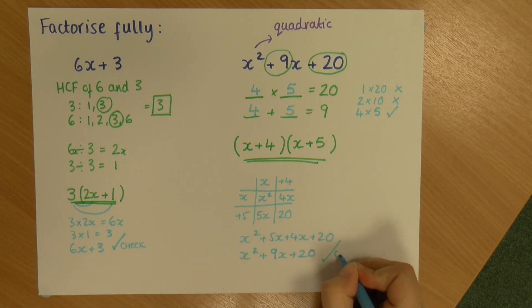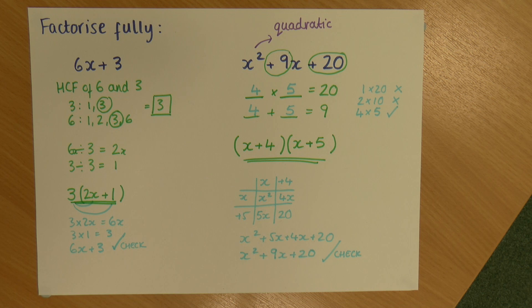So tick, check is correct. And it's always worth checking these because you can make silly mistakes extremely easily. And so that is how we factorise simple expressions and also quadratic equations.